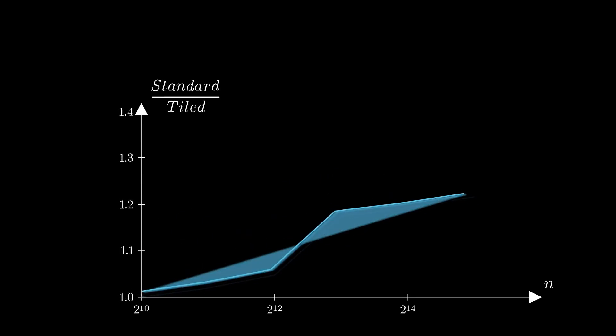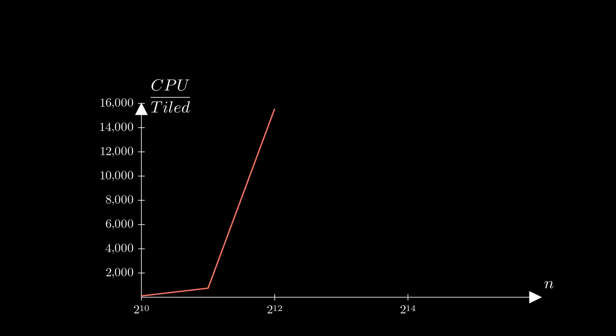If we were to compare the ratios, standard matrix multiplication is around 20% slower than our tiled version. And the CPU version is, well, up to 15,000 times slower, and it's still profiled only for the smallest matrices.